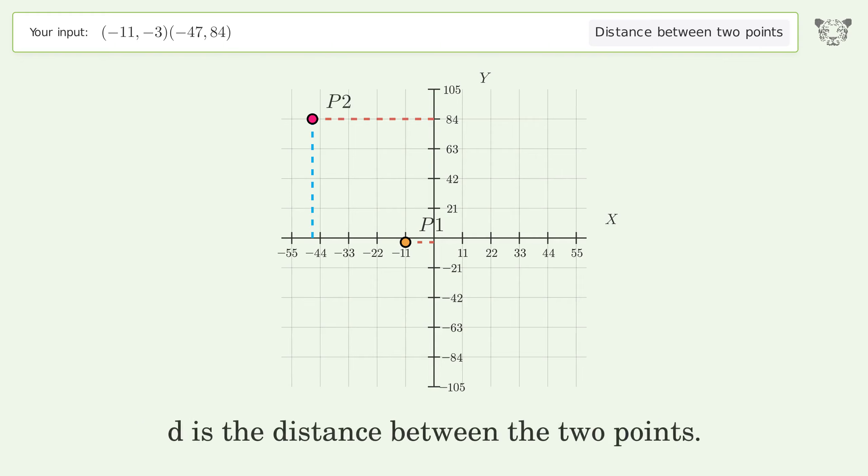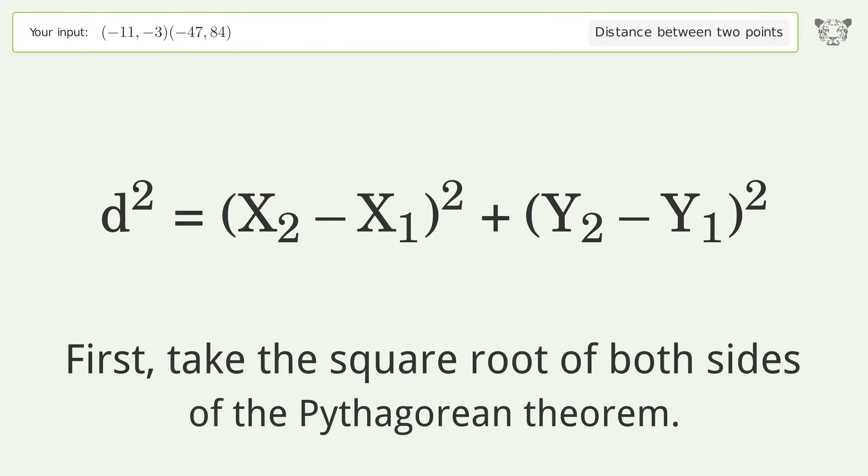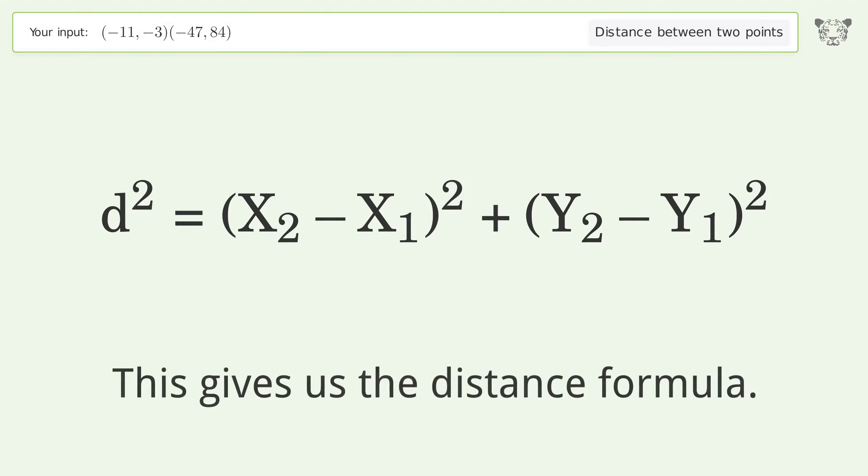d is the distance between the two points. First, take the square root of both sides of the Pythagorean theorem. This gives us the distance formula.